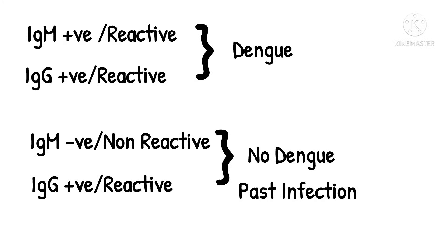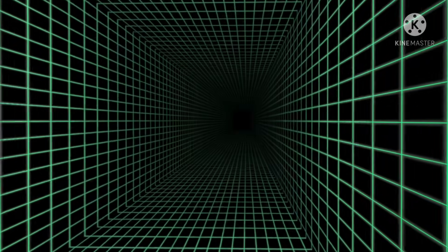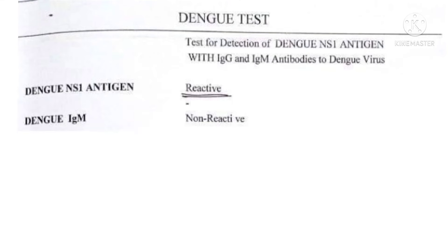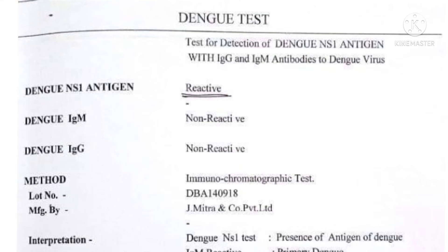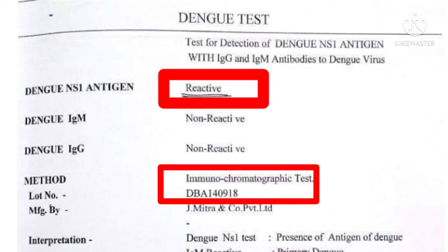With this basic information, let us see how to read a dengue test report. In this report you can see that the NS1 antigen is positive or reactive, so we can conclude that the person is affected with dengue. This test is done by ICT method, that is immunochromatographic test method.